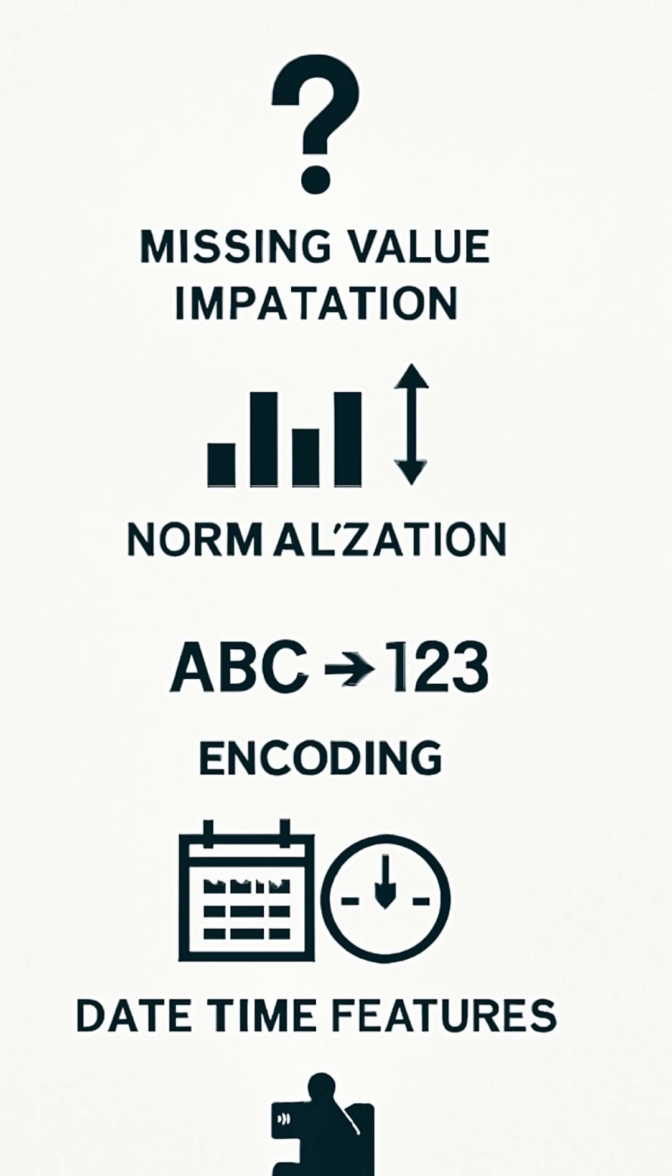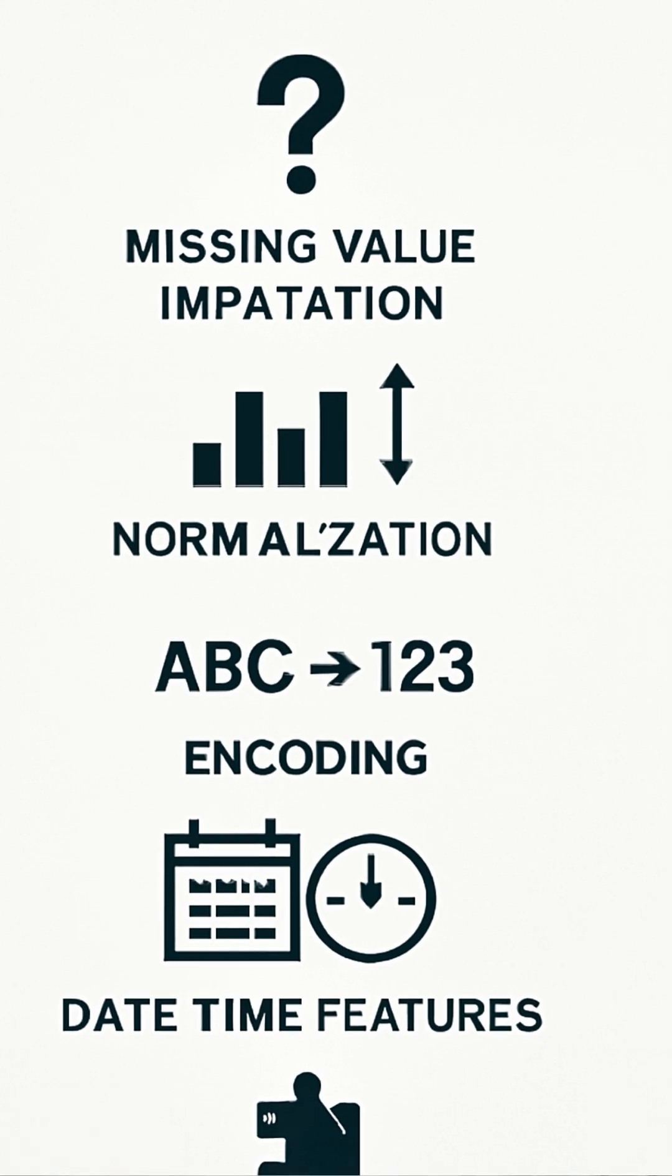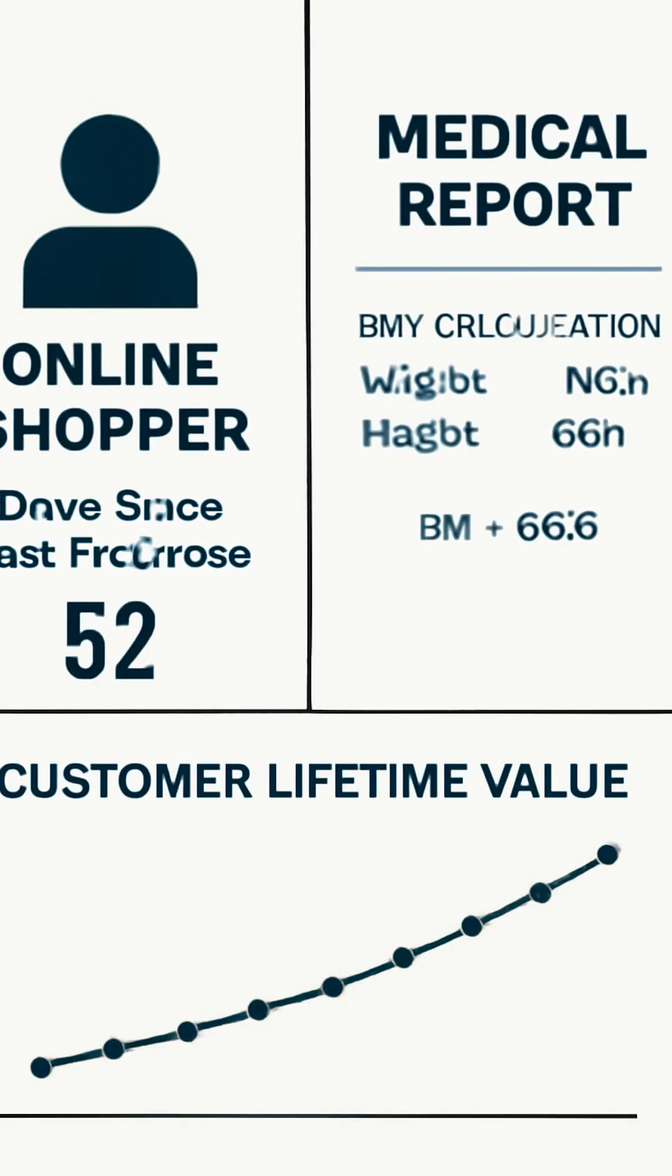Interaction features means combining features for deeper insights. Let's discuss real world examples. In e-commerce, we might create features like days since last purchase. In healthcare, we might calculate BMI from weight and height. These small transformations help machines make smarter predictions.